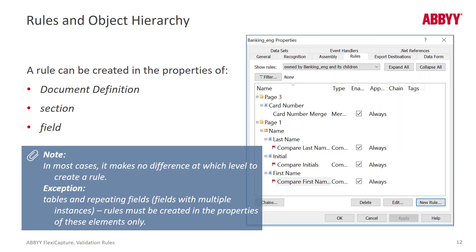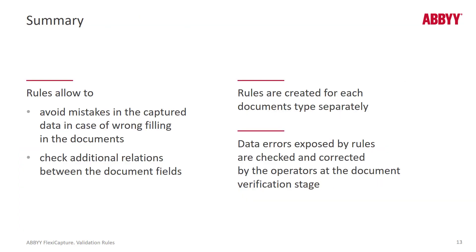Rules can be created at the document definition level, at the document definition section level, or the document definition field level. Usually it doesn't make a difference, except when you're dealing with table and repeating group fields — then you need to create the rule at the field level. We talked about why rules are important and some of the different things you can do with both out-of-the-box rules and scripted rules. We're exposing data errors, sometimes automatically correcting them, and sometimes reducing the amount of verification needed, as in the checksum example. So it's important to get skillful at creating FlexiCapture rules, and this falls into the time you should allocate for working in the document definition to make sure you're getting the best possible results.